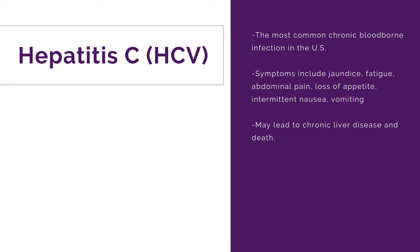Hepatitis C (HCV): Hepatitis C is the most common chronic bloodborne infection in the United States. Symptoms include jaundice, fatigue, abdominal pain, loss of appetite, intermittent nausea, and vomiting. It may lead to chronic liver disease and death.